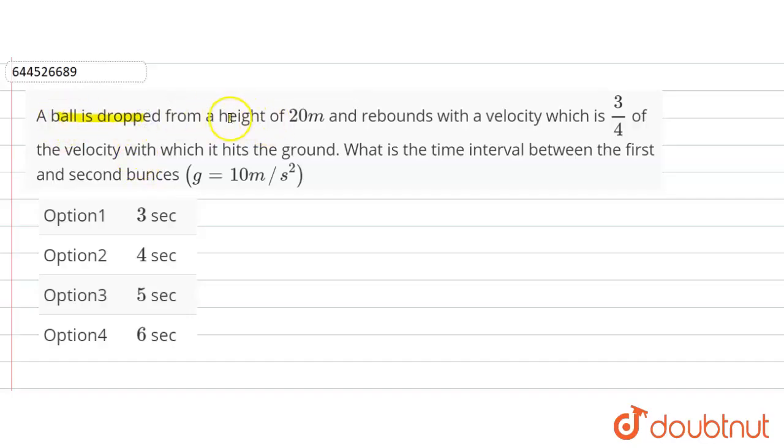A ball is dropped from a height of 20 meters and rebounds with a velocity which is three-fourths of the velocity with which it hits the ground. What is the time interval between the first and second bounce?